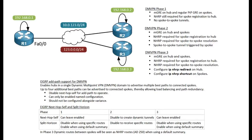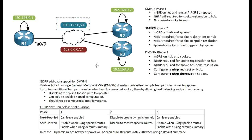Let's discuss using EIGRP for our dynamic multi-point VPN — using EIGRP as the main routing protocol to send prefixes over DMVPN. If you're watching this video, I'm assuming you have a basic knowledge of what DMVPN is. For my example, I'm going to use a simple network consisting of three routers, with Router 1 being the hub. We'll use the 1.2.3 network as our NBMA network and the 10.0.1.2.3 network on our tunnel interfaces.